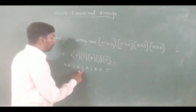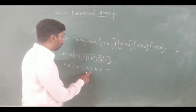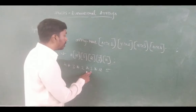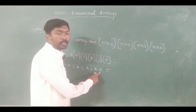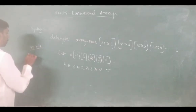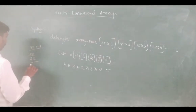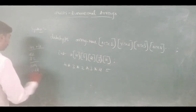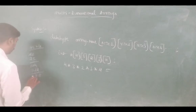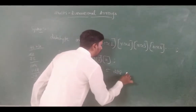So, 4 × 3 = 12, 12 × 2 = 24, 24 × 3 = 72, 72 × 4 = 288 elements. We can store a maximum of 288 elements.